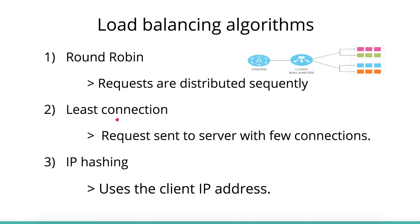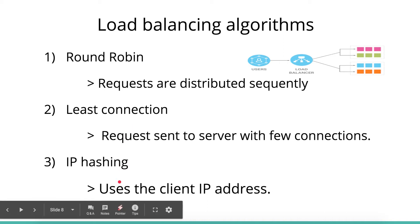There is a notable disadvantage to round robin, which we'll discuss shortly. The second algorithm is least connection. The load balancer figures out which server has the least number of connections or the least CPU and memory usage, and diverts traffic to that server. This is called the least connection algorithm.